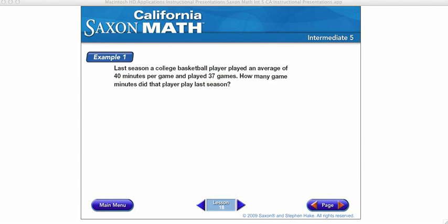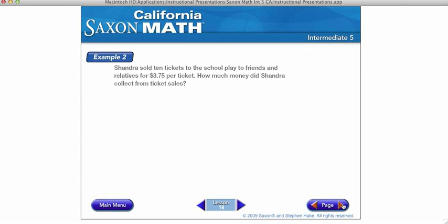Okay, let's look at example 2. Chandra sold 10 tickets to the school play to friends and relatives for $3.75 per ticket. How much money did Chandra collect from ticket sales? So, we have 10 tickets at $3.75 a ticket.